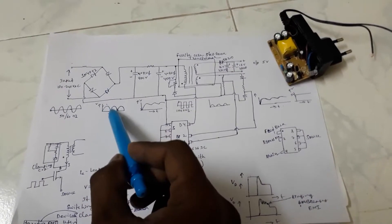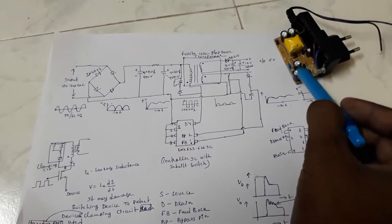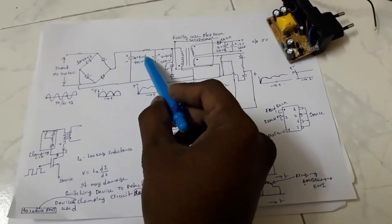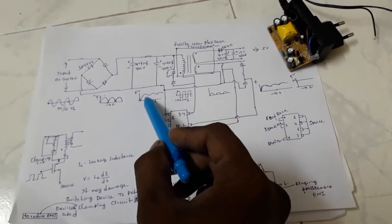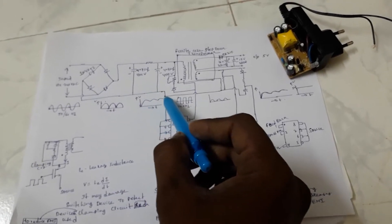After rectification, the waveform is fed to a capacitor filter and these are the two filtering capacitors. The filtering capacitors will be used for reducing the ripple, and after the filtering the DC is obtained.